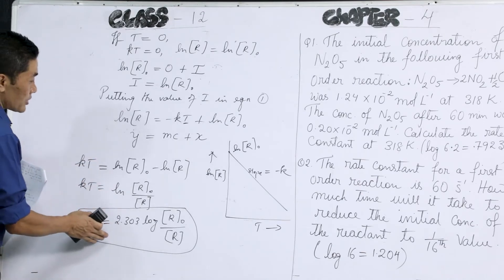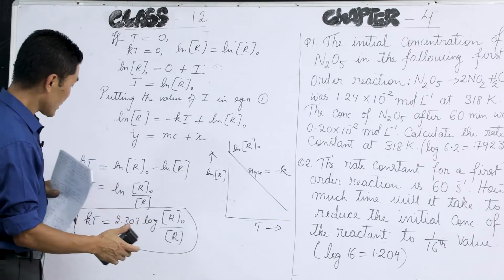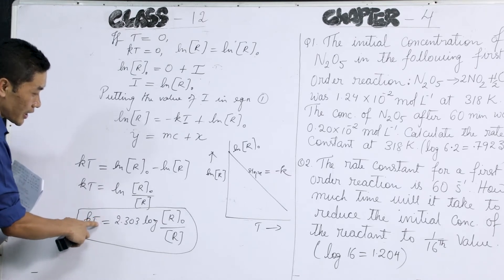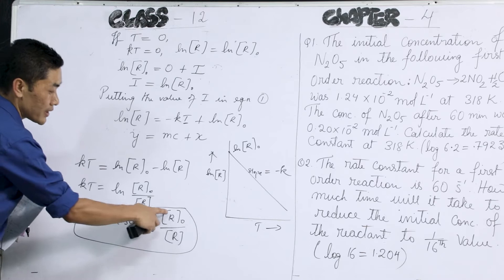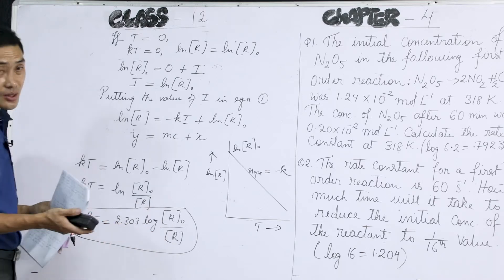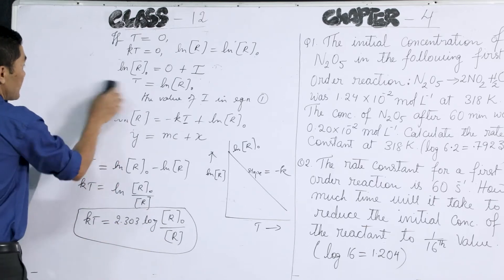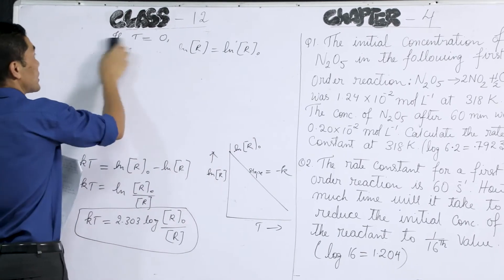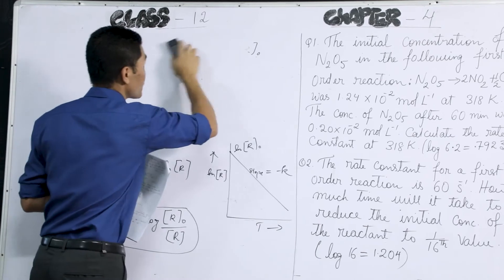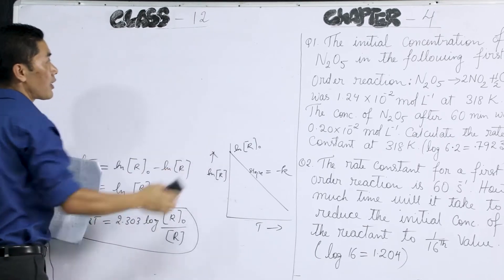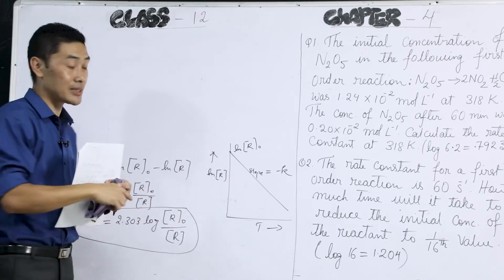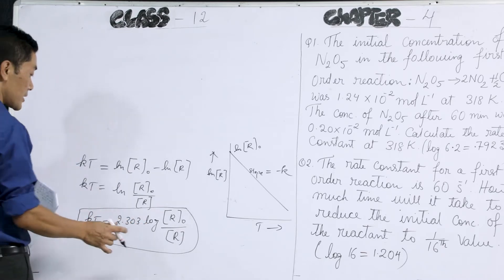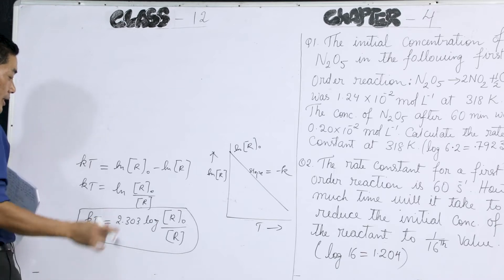Using these equations we can calculate the rate constant k, and we can also calculate the time, if we know the initial and final concentrations of the reactant. Now, half-life period is the time in which the concentration of the reactants becomes half, or half of the reaction is completed. So if we want to calculate the half-life period for a first order reaction we can use this equation again.